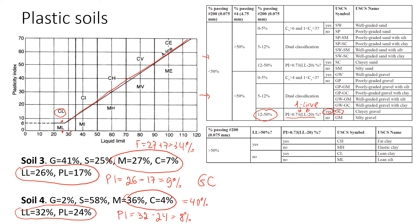Classifying Soil 4: less than 50 percent fines, so we use the top part of the chart. We have more sand, so we go into the sand section. Fines are 40 percent. The plasticity index is below the A-line, so the answer is no, and the classification is SM.